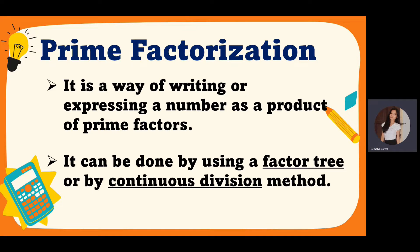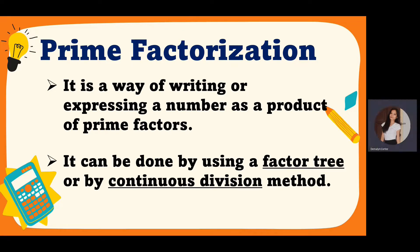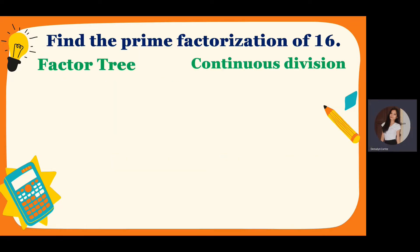All right, let's start. Let us use the factor tree and continuous division. So find the prime factorization of 16. The given number is 16. So we can use the factor tree or continuous division — it's up to you. The result is just the same; the answer is just the same.